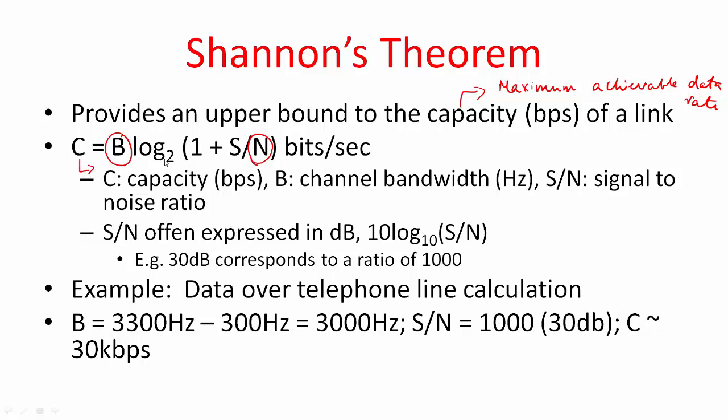Capacity is given as C equals B log base 2 (1 plus S/N) bits per second, where B is the channel bandwidth and S/N is signal to noise ratio. S/N is often expressed in decibels, but in the formula you have to use the signal to noise ratio. For example, if this was 30 dB, this corresponds to a ratio of 1000. That means the signal is thousand times more powerful than the noise.